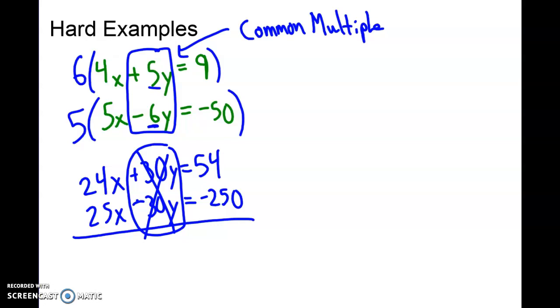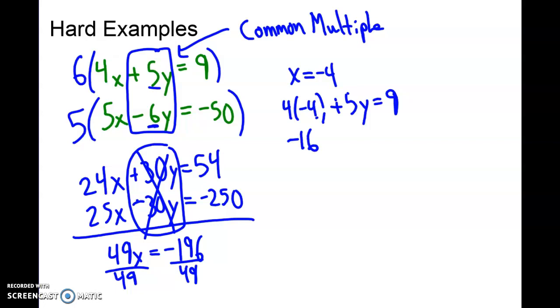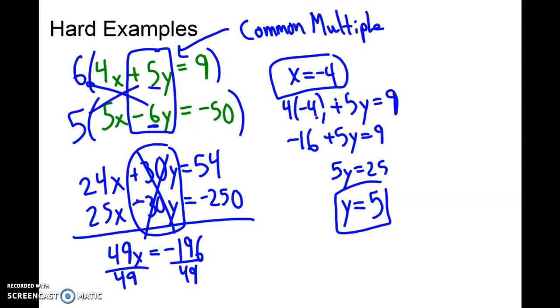Divide that by 49, and we have x equals negative 4. Plug in negative 4 to either equation. I'll go to the top one. 4 times negative 4 plus 5y equals 9. So negative 16 plus 5y equals 9. 5y equals 25. y equals 5. So it's the same process, the same procedure, just more and more work for the hard examples. And for the hard examples, you need to match them up. Easy way is just to take these numbers and multiply like that to find that common multiple between either x's or y's.